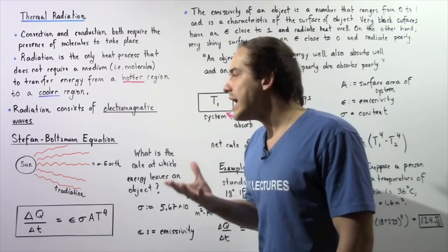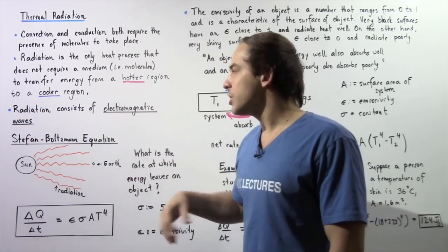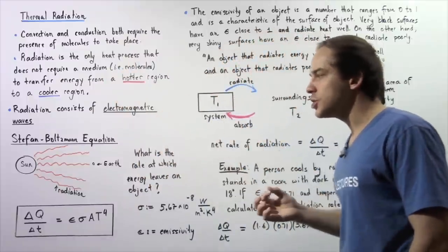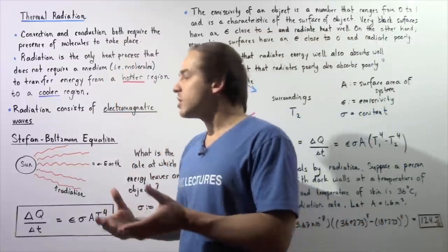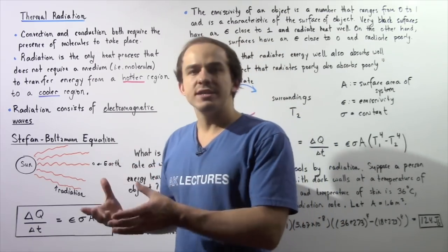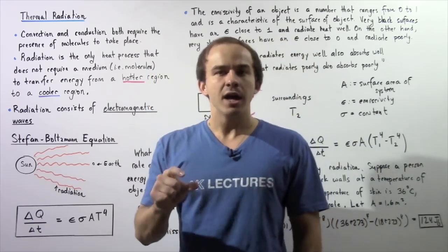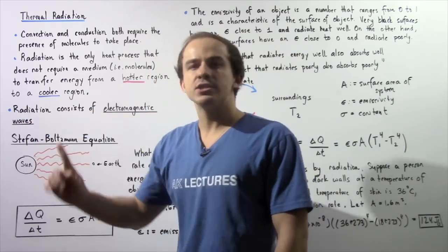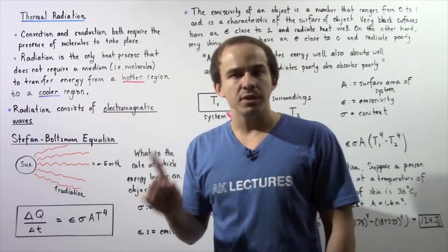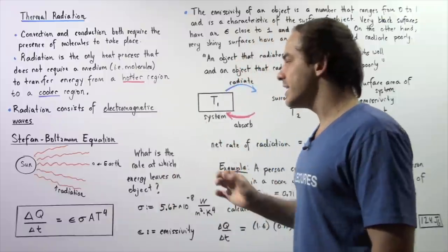The way that energy gets from the sun to the earth is by thermal radiation. Different reactions in the sun increase its energy and temperature. Because the temperature of the sun is greater than the temperature of the earth, heat transfer takes place — and it takes place in the form of thermal radiation.